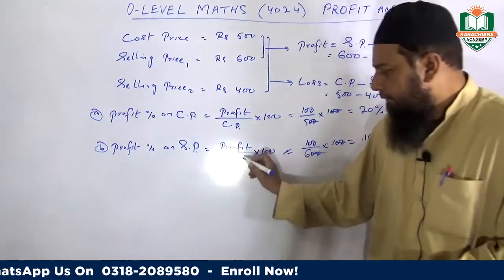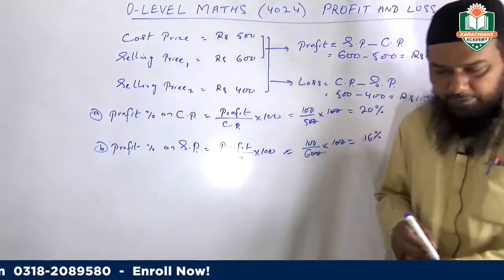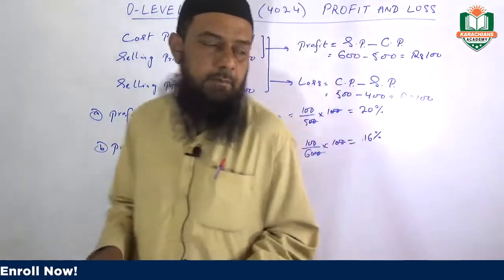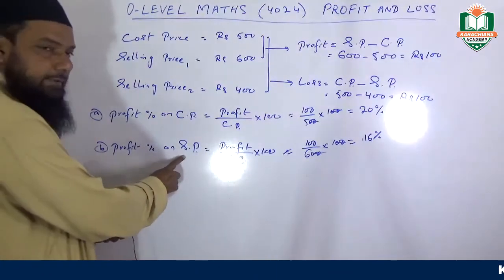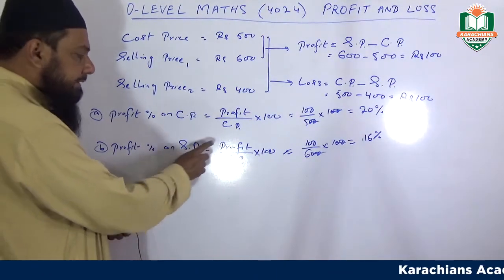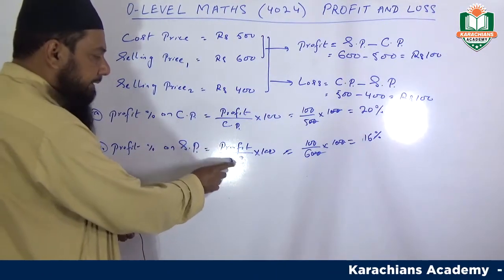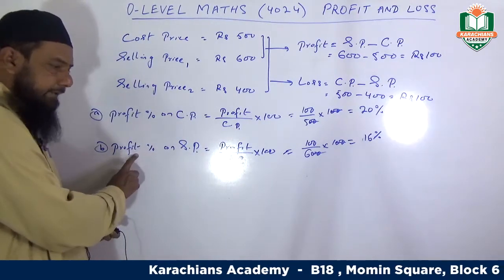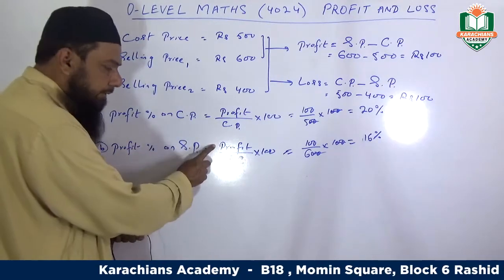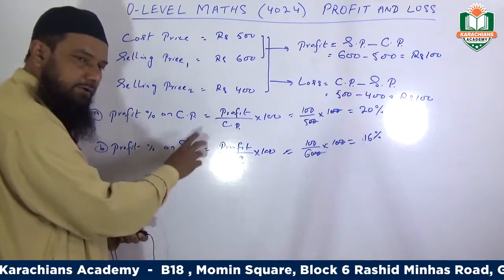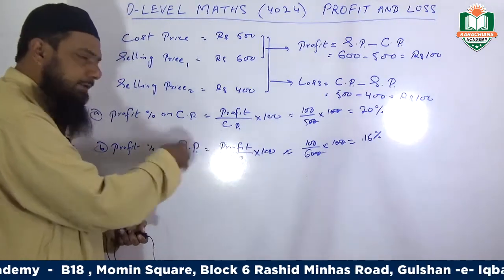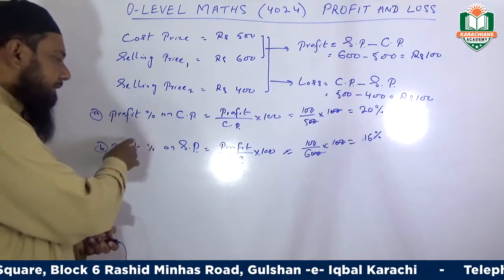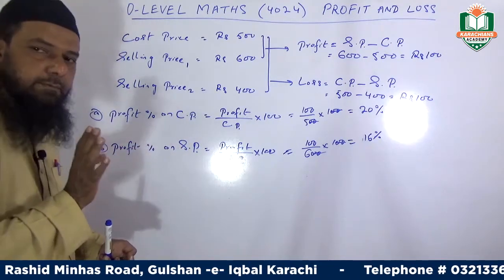These two formulas are very important. There are four aspects of this formula: selling price, profit percentage, profit, and the constant 100. If any two of these three — profit percentage, profit, selling price — are known, you can easily find out the third using these formulas.